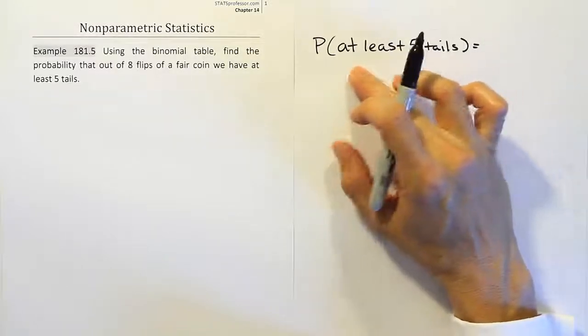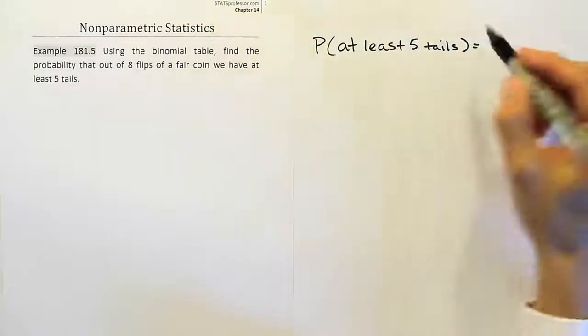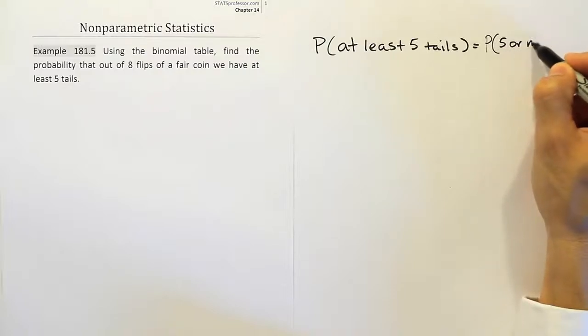It means five or more, correct? Because at least five means a minimum of five. So five or more. This is the same as the probability of five or more.